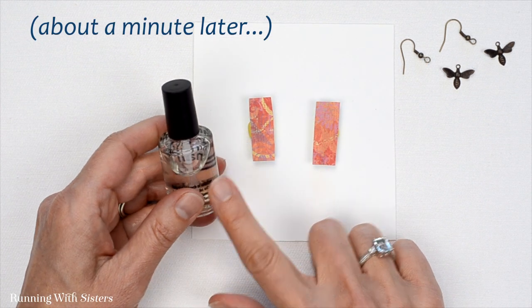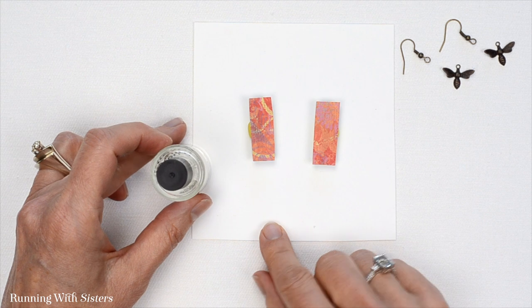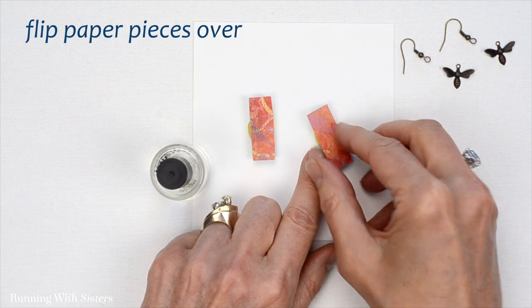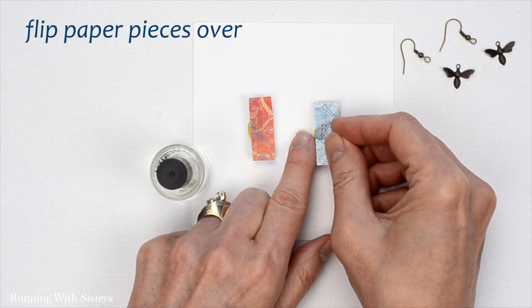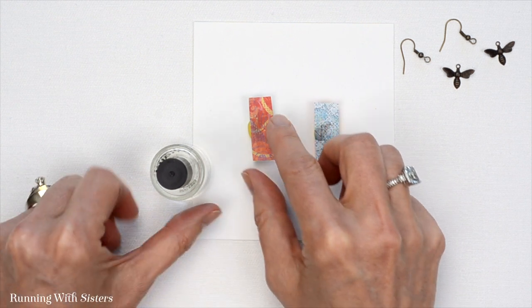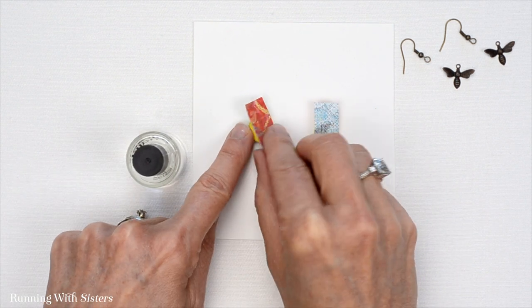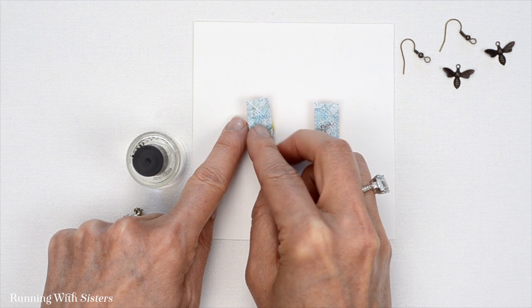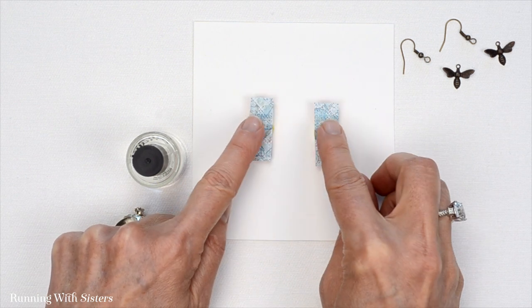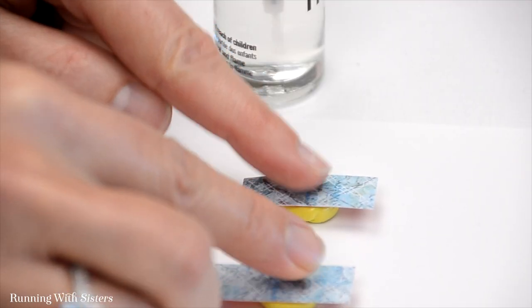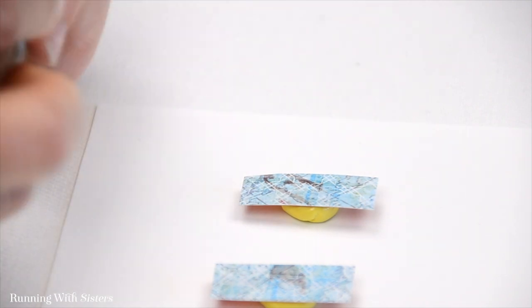We waited about a minute for our clear nail polish to dry, and now we're ready to flip over our scrap of paper earrings here. It really is fun to shop for paper for this because you can go to the scrapbook section of the craft store and take a look at all the different papers. There's so many to choose from. You could use handmade paper also, that would be really pretty.